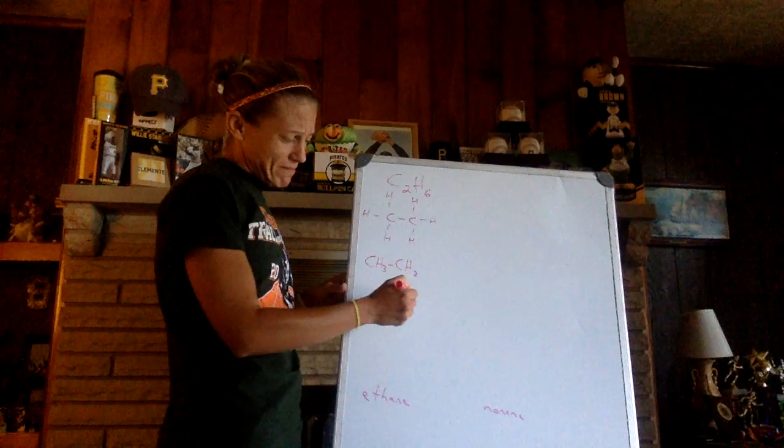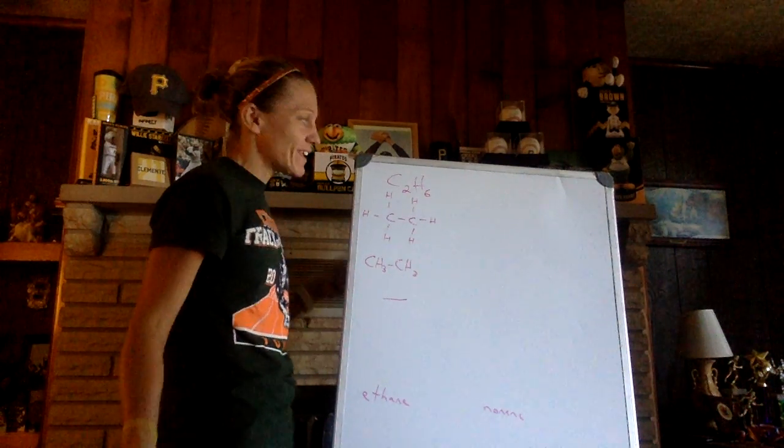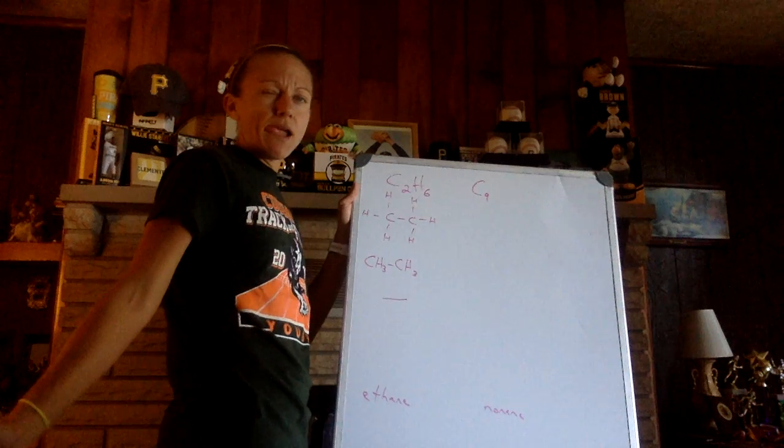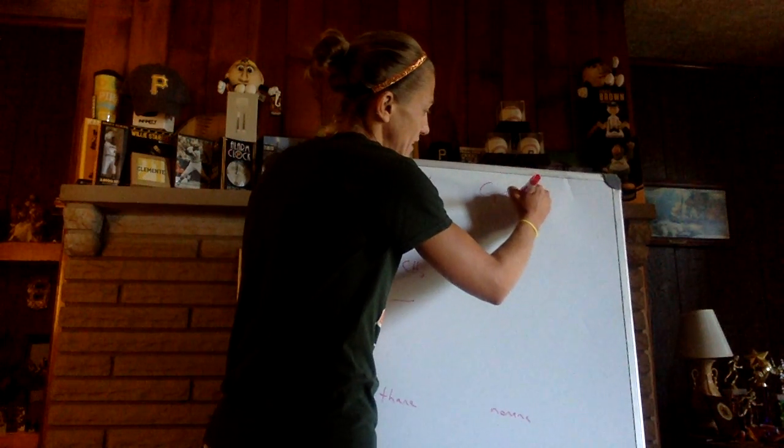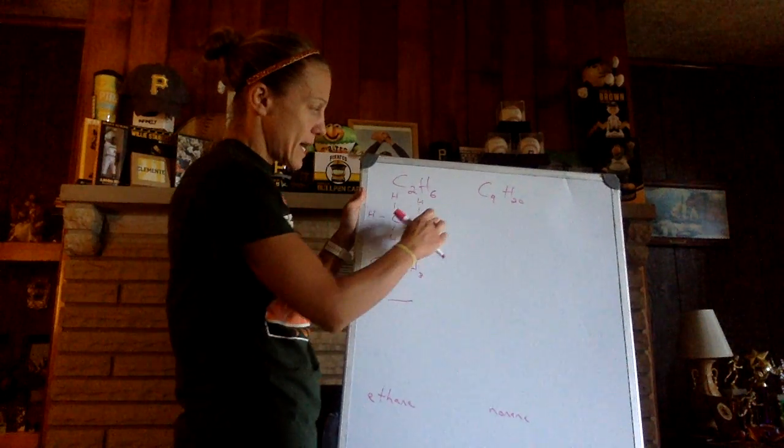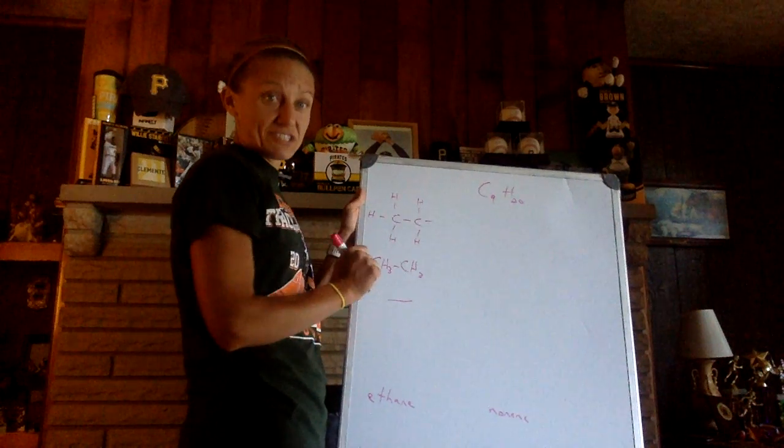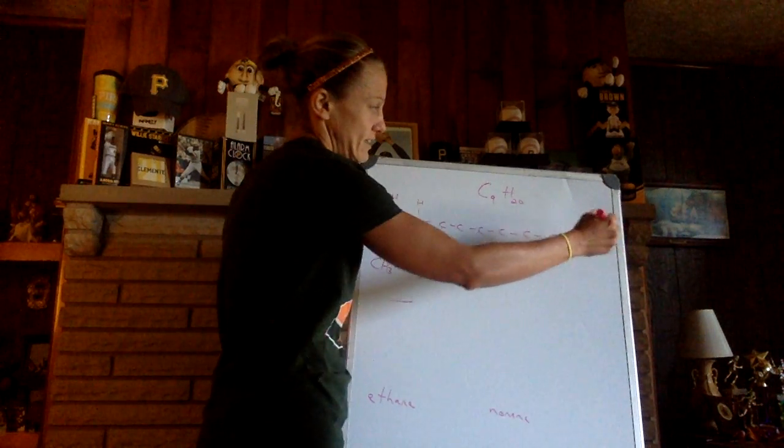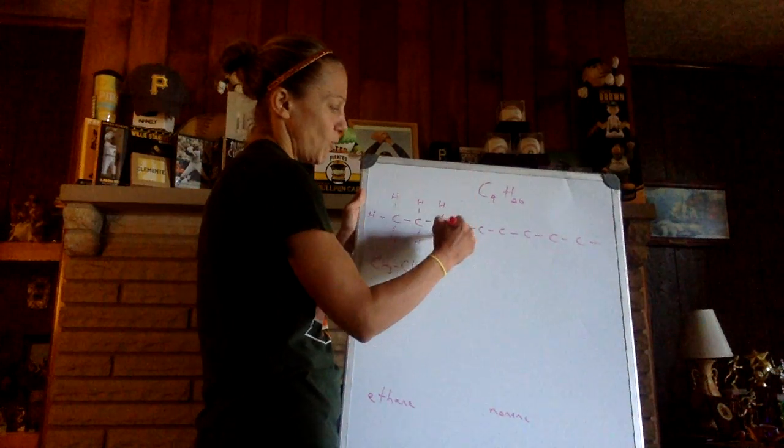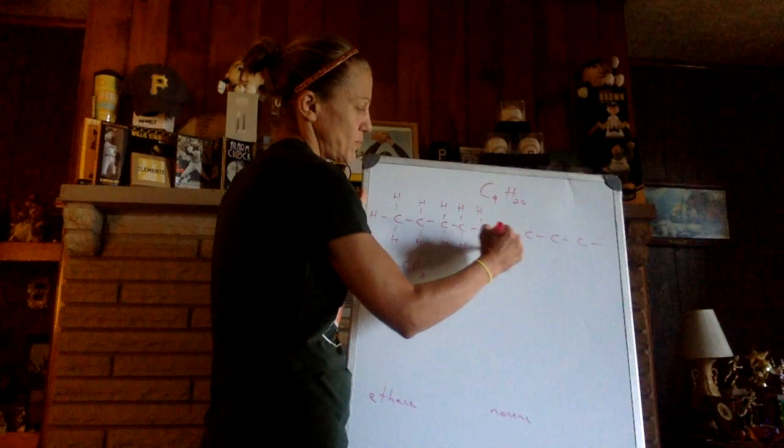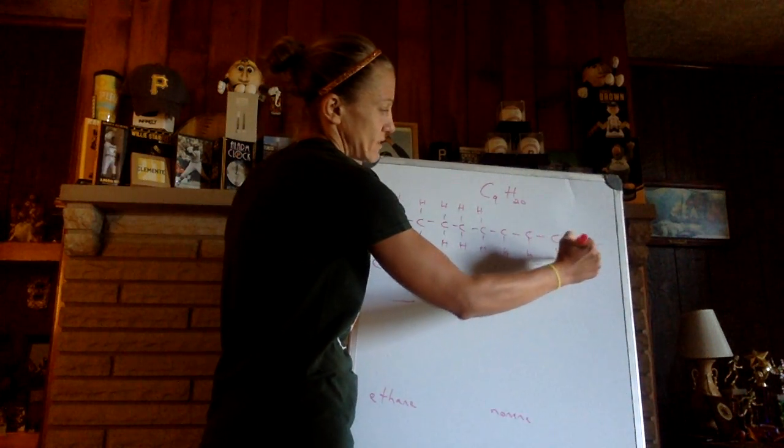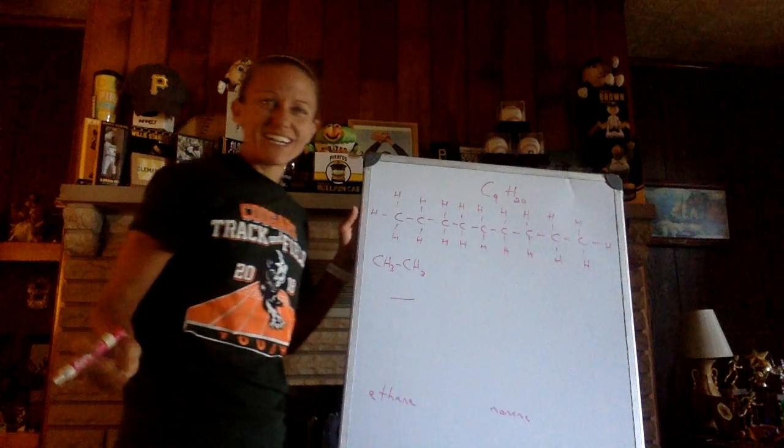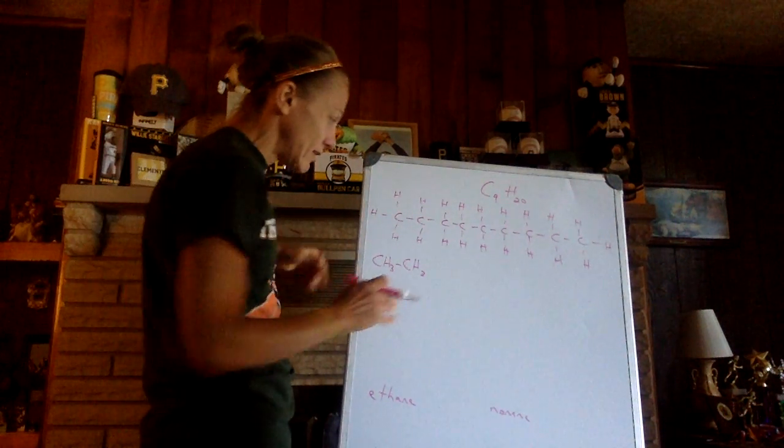Skeletal formula with each end being a carbon looks like a line. Nonane might be worse because it's going to be this giant molecule. So C9, 2 times 9 is 18 plus 2 is 20. I'm taking a guess we're going to need 20 hydrogens. So there's 3, 4, 5, 6, 7, 8, 9. You see why really we're not going to draw too many structural formulas for hydrocarbons in this class.